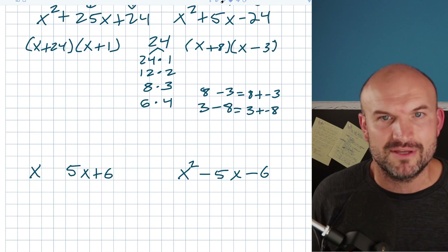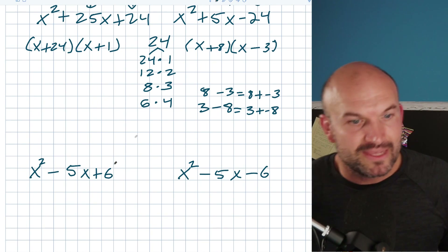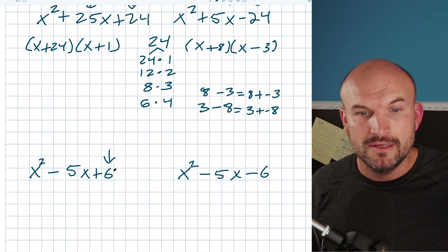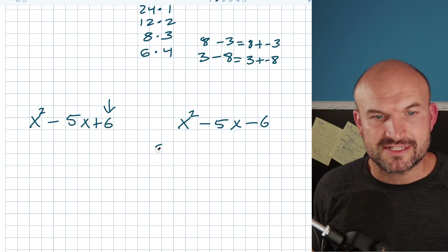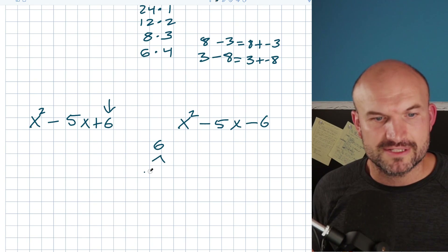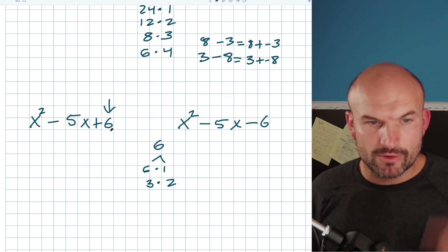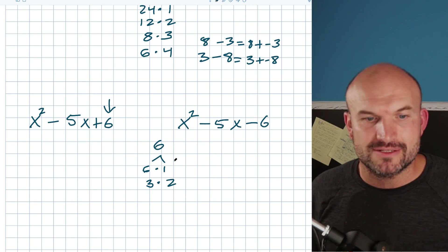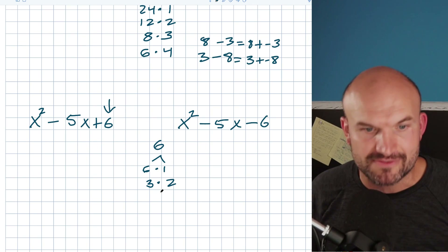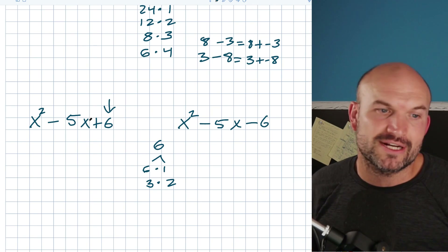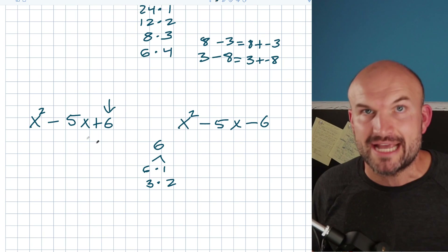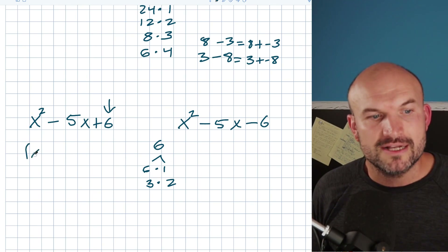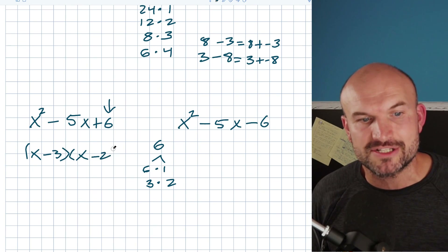In this next example, the last term is positive 6, so we know it's a sum. The factors of 6 are 6 times 1 and 3 times 2. Six and 1 give a sum of 7; 3 and 2 give a sum of 5 — so it's 3 and 2. But since they need to add to give negative 5, they both have to be negative. Negative times negative gives positive 6, so this factors as (x − 3)(x − 2).